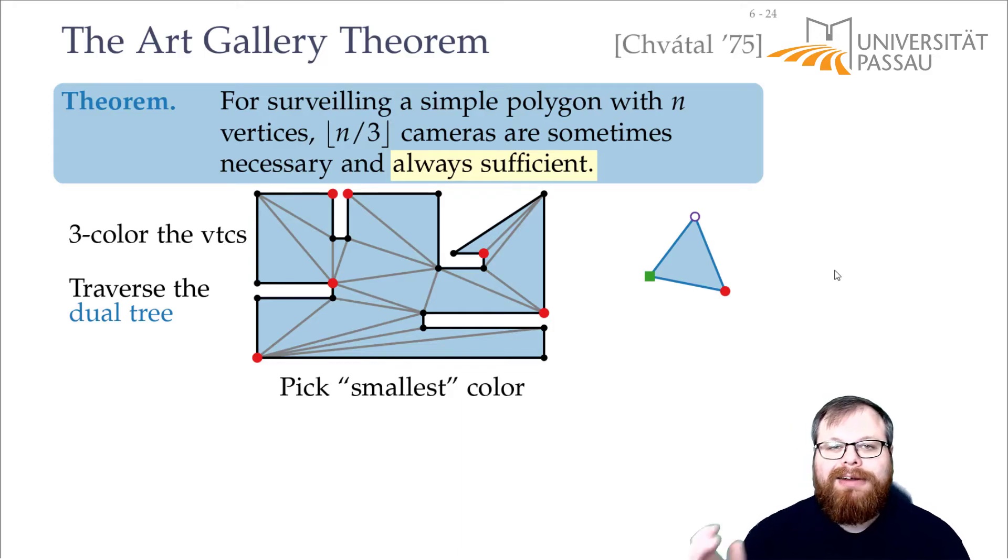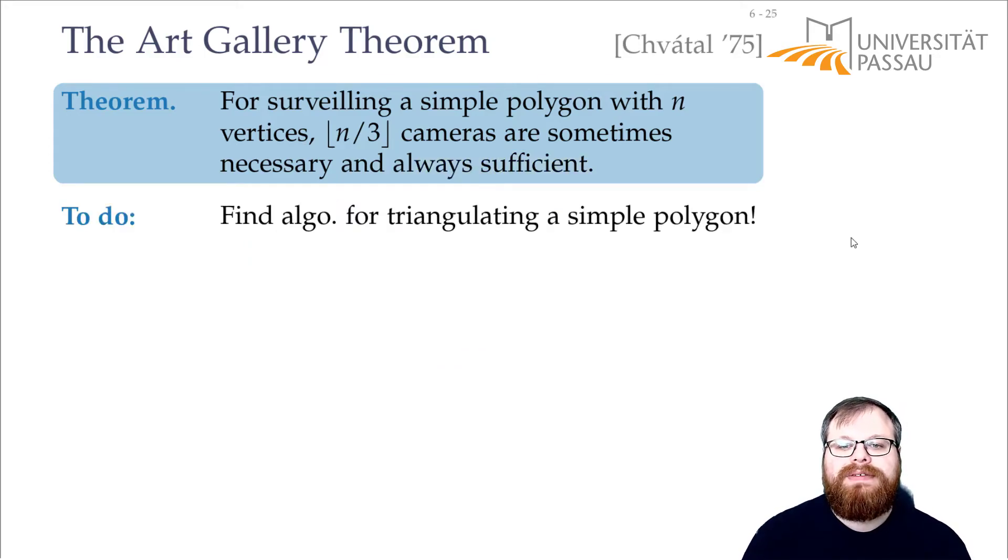I told you, you can always triangulate a polygon, but we don't know how to do it yet. So we still have to find an algorithm for how we can triangulate a simple polygon. How would you do it? I mean, we had a proof that there is always a triangulation. And that proof was basically constructive. So we can use this proof to get an algorithm.